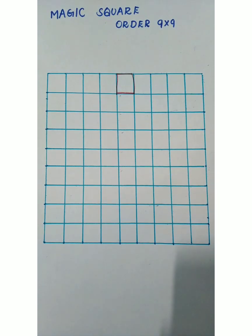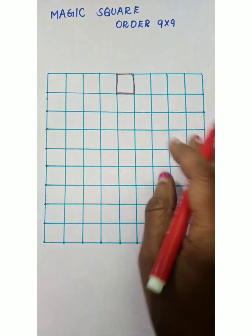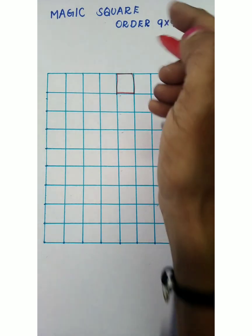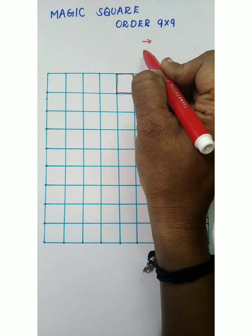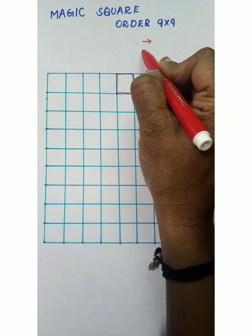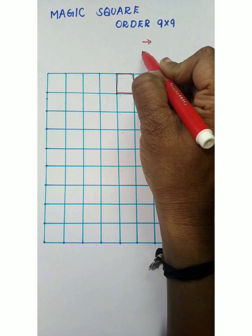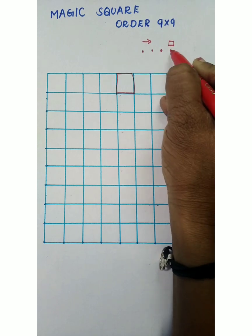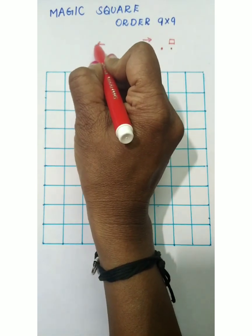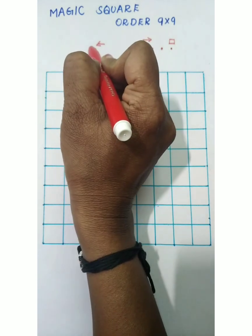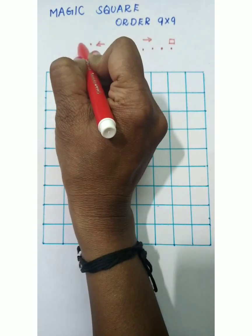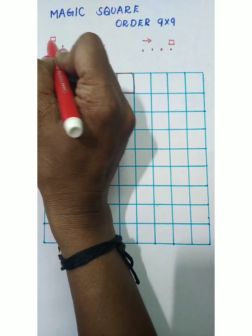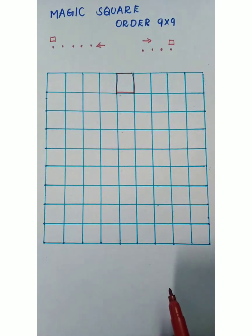We will use natural numbers. First we have to move towards the right side. While moving right, we have to pass four boxes and place the digit on top of that box. While moving left, we have to cross five boxes and place the digit on top of that box.